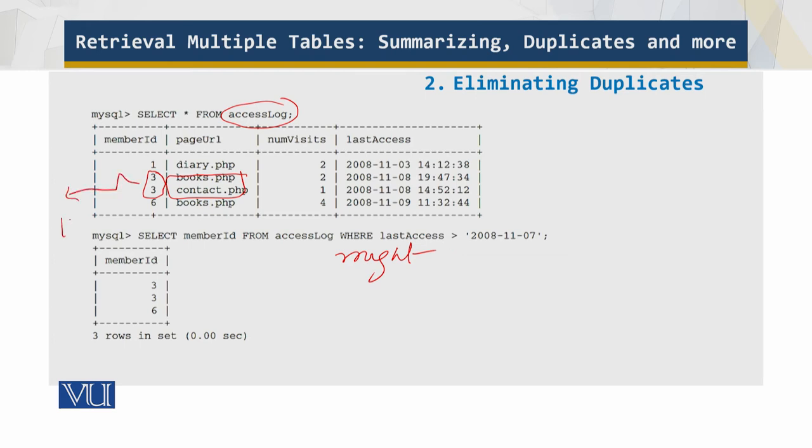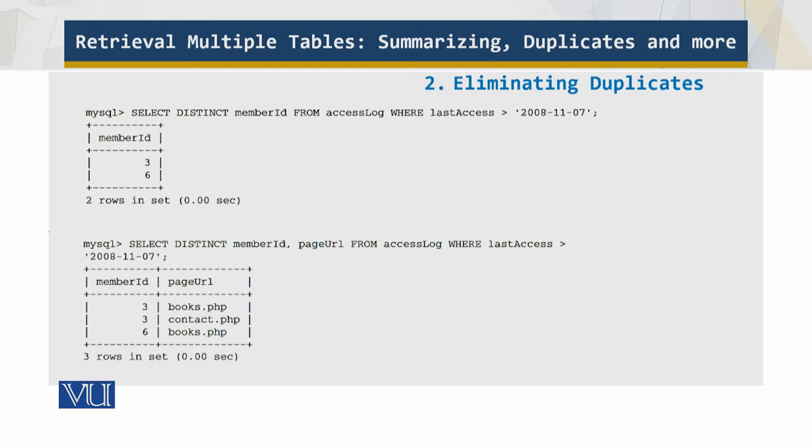If you were displaying this data in a report, for example, user number 3 would appear twice. You can imagine what would happen if this was 100 times viewed. So we need to use duplicates removal. DISTINCT removes any rows that are exact duplicates of other rows from the result set. For example, the following query still contains two instances of 3 in the member ID column because the page URL column is different. 3 is here but these are different. Because of DISTINCT, one 3 is gone.